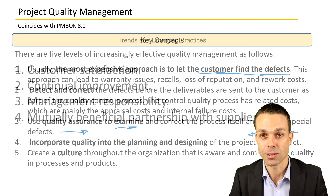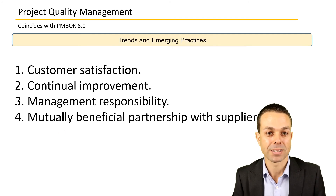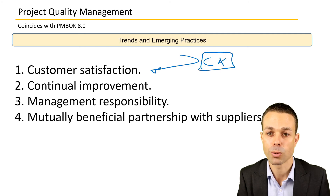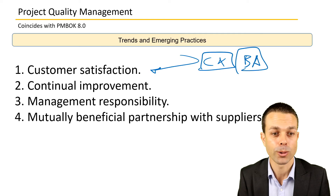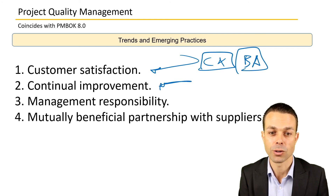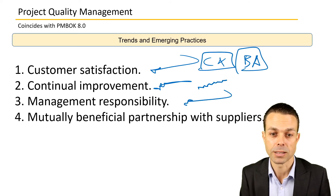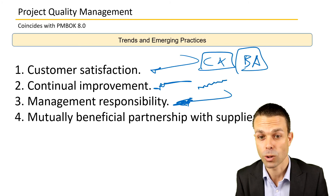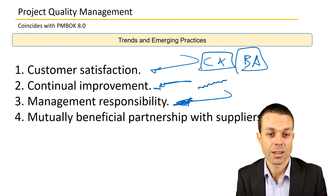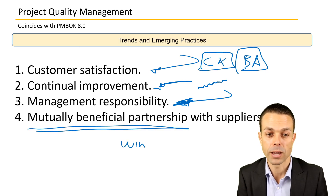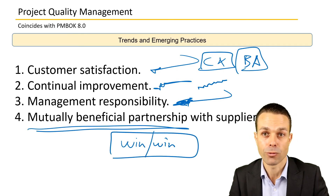Trends and emerging practices include customer satisfaction — customer experience (CX) is becoming more prominent, and the business analyst role focuses on customer requirements. Continuous improvement means making small incremental improvements over time. Management responsibility means the manager is responsible for quality, not just the team members individually. And a mutually beneficial partnership with suppliers ensures win-win agreements for all outcomes being delivered.